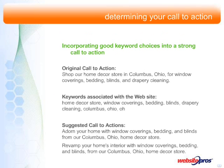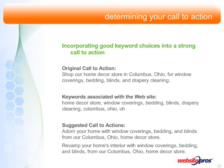Let's take a look at another example. The original call to action reads: 'Shop our home decor store in Columbus, Ohio for window coverings, bedding, blinds, and drapery cleaning.' This call to action is concise but awkward — 'Shop our home decor store' is vague, and 'drapery cleaning' was thrown in with a list of products, amplifying the awkwardness. A call to action only requires the primary keywords. Here's a revised version: 'Adorn your home with window coverings, bedding, and blinds from our Columbus, Ohio home decor store.' Or alternatively: 'Revamp your home's interior with window coverings, bedding, and blinds from our Columbus, Ohio home decor store.' This is more compelling for visitors and packed with keywords for better search engine listings.